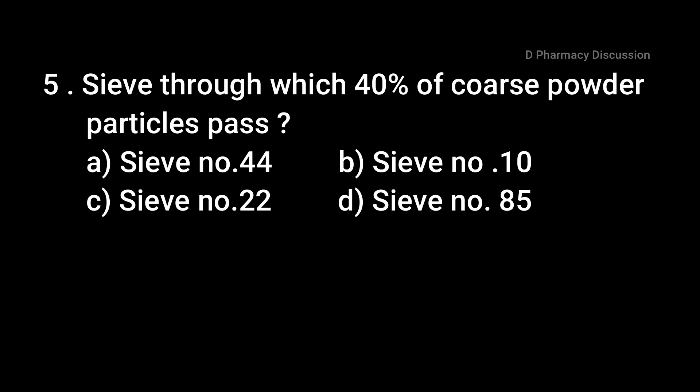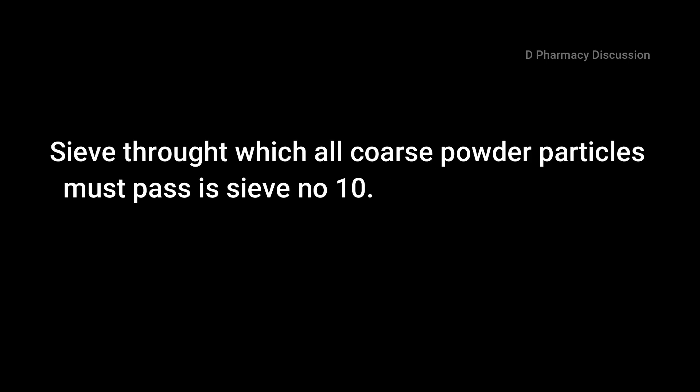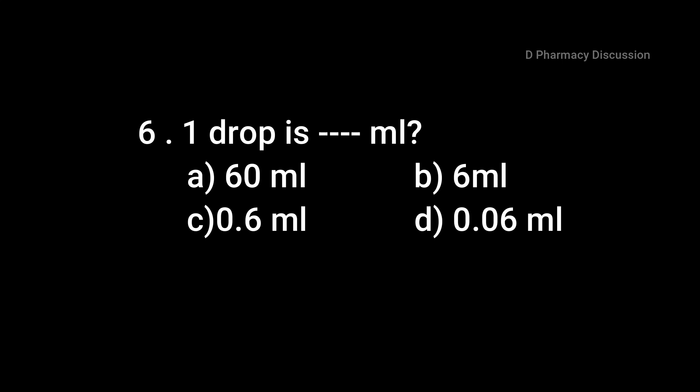Question 5: The sieve through which 40% of the coarse powder particles pass is. Option A: sieve number 44, B: sieve number 10, C: sieve number 22, and Option D: sieve number 85. Correct answer is Option A, sieve number 44. The sieve through which all the coarse powder particles must pass is sieve number 10.